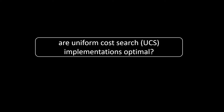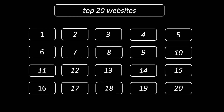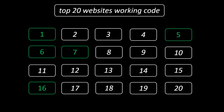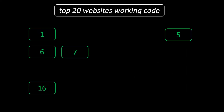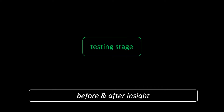The challenge: are implementations of uniform cost search optimal? We searched online and found the top 20 websites for uniform cost search in Python, and only five of these had working code. We tested that code from the five websites. Spoiler alert: the answer is yes or no, depending on some insight — which we'll give you in this video, so keep watching.